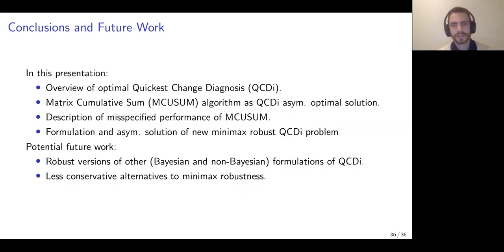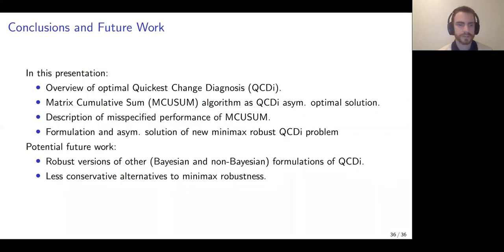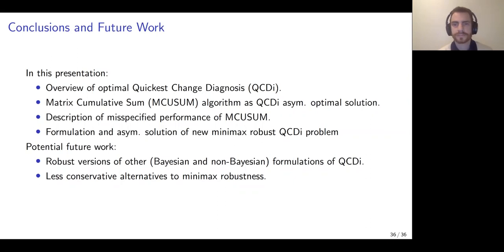In this presentation, I gave an overview of optimal Quickest Change Diagnosis, described the Matrix CUSUM algorithm as an asymptotically optimal solution, and showed it has interesting misspecified performance properties that make it useful in practice and enable it to serve as the foundation of a new asymptotically minimax robust Quickest Change Diagnosis approach. Potential future work includes extending robust ideas to other formulations of Quickest Change Diagnosis and exploring less conservative alternatives to the minimax robust approach.